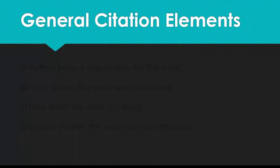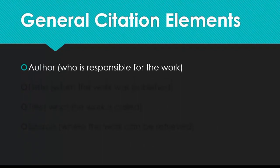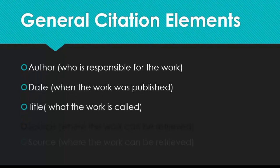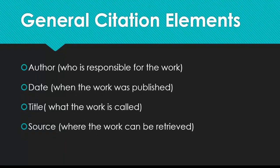As a general overview, each reference entry will have four elements: author — who is responsible for the work; date — when the work was published; title — what the work was called; and source — where the work can be retrieved. Each type of source might have different information in each category.